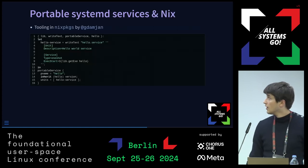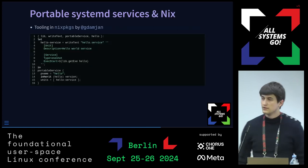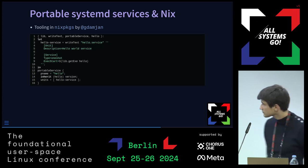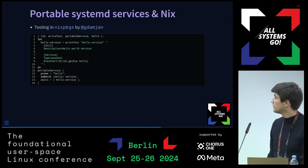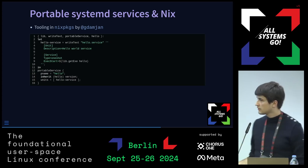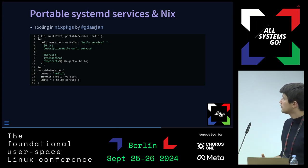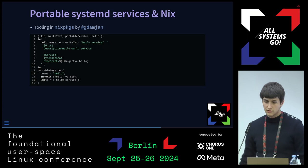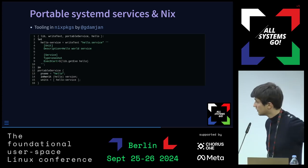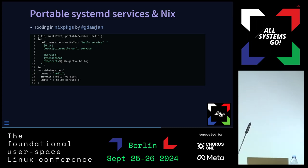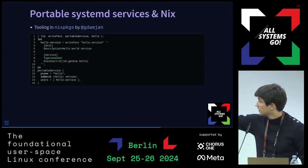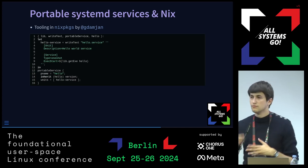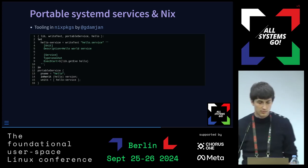With Nix, we have tooling introduced by Jay Damjan to generate portable systemd services easily. Basically, you describe a unit file, give it to the portableService function, and Nix will compute the runtime closure of that unit file, put everything needed into the image automatically, and spit out an image. For example, we have a unit file where the ExecStart runs the hello binary from Nix — Nix computes the runtime closure of the hello package, puts everything in the image, and gives it to you.